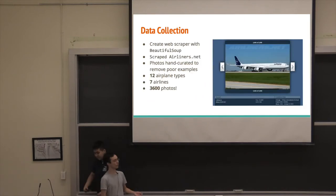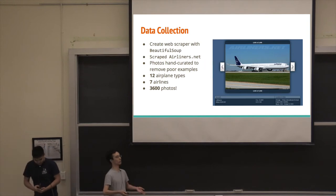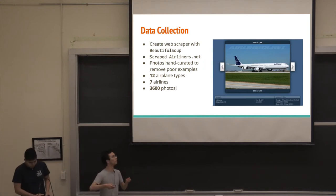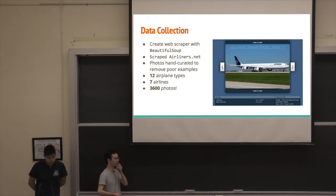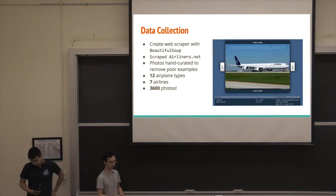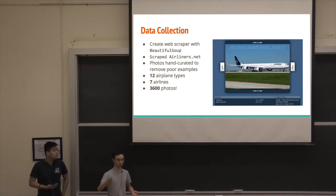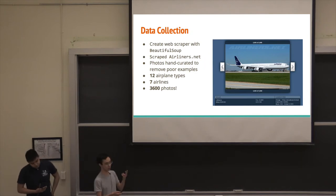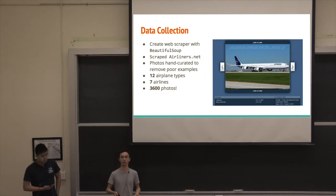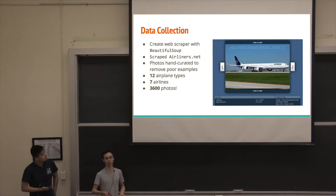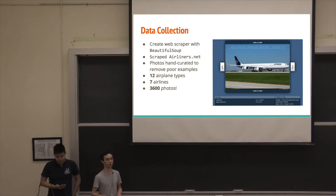So basically, to collect our data, there's this website called airliners.net that has a bunch of photos that people have manually reviewed. So they're vetted by a lot of people. So we know that the photos are very legitimate. We used a web scraper called BeautifulSoup to basically go through the website and scrape all the images. So eventually, we had 12 different airplanes from seven different airlines for a total of 3,600 photos. And all these photos were normalized before we fed them into our neural network.